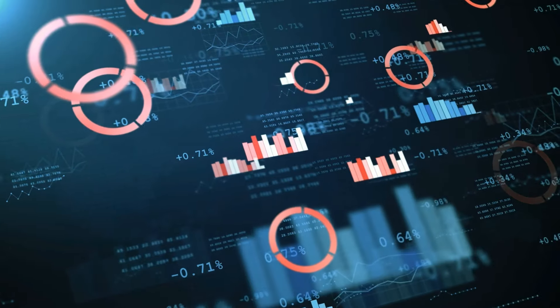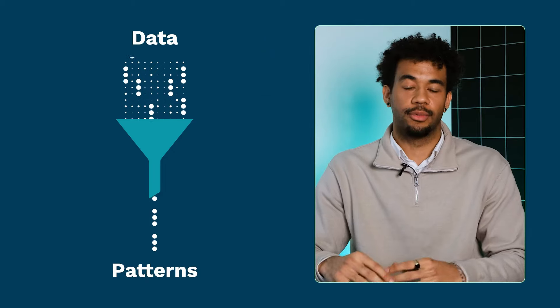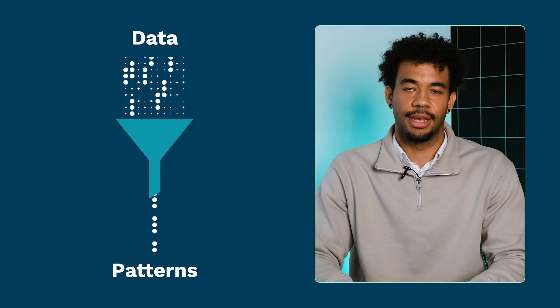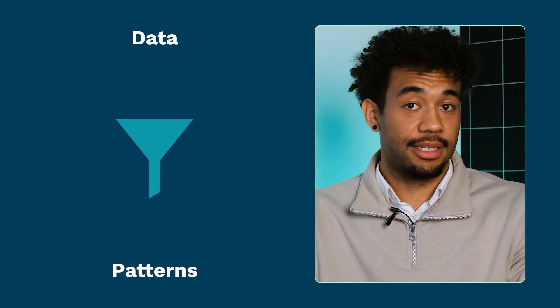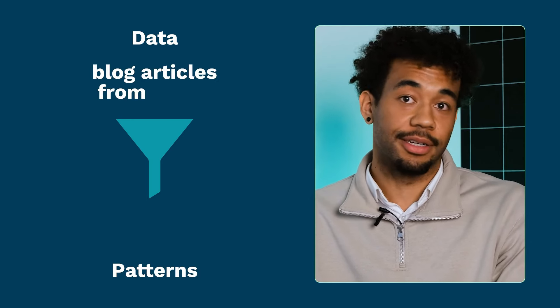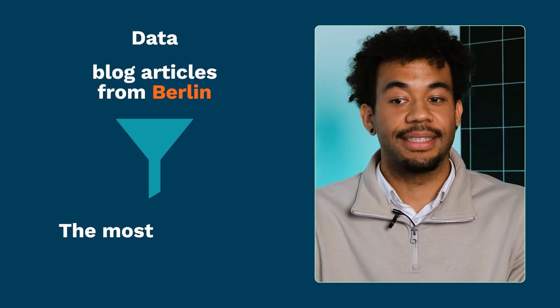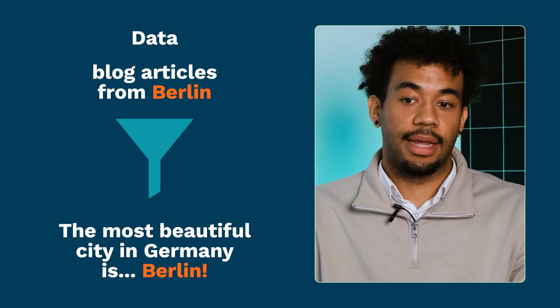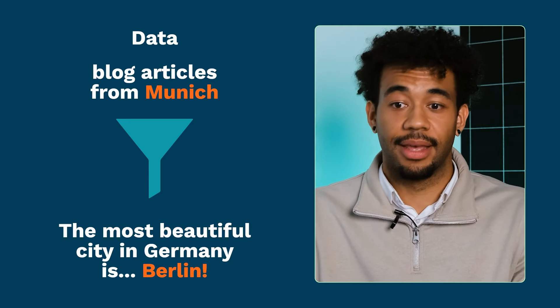How does the model know the probabilities of what should come next? Remember, a generative AI model learns patterns in its training data based on complex statistical and mathematical methods. It looks at all the data fed into it and extracts typical patterns and structures. If the data includes many blog articles from people from Berlin, the model might predict the second continuation. But if the training data leans more toward text favoring Munich, the first continuation might be chosen. And if the training data is very diverse — containing academic or argumentative texts — the output might look quite different.